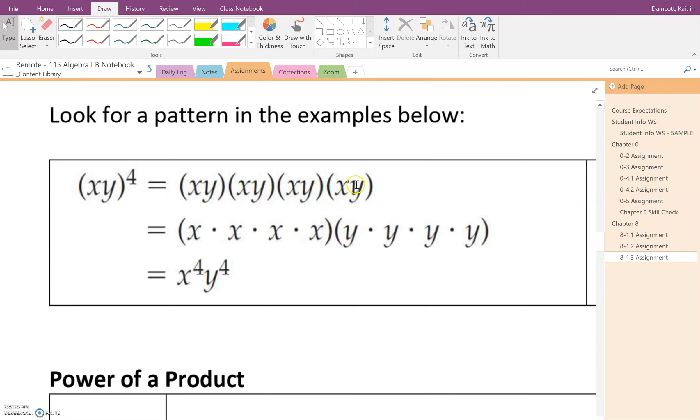Now using our associative and commutative properties, we can change the order and we can change the grouping. So all we're doing here is taking the x's, 1, 2, 3, 4 of them, and putting them in a group, and then putting all the y's together, 1, 2, 3, 4 y's together.